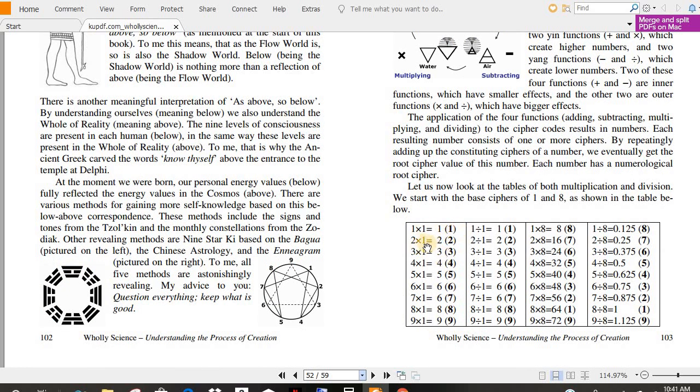So, one times one is one, two times one is two, three times one is three, so on to nine. Then division. Then over here, we get one times eight is eight, two times eight is 16, and one plus six is seven. Three times eight is 24, and two plus four is six. See the cipher here?